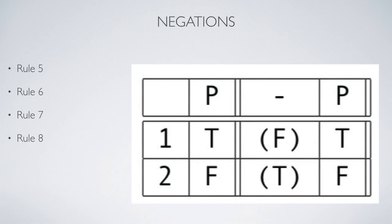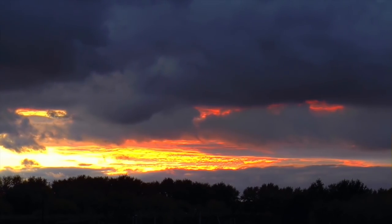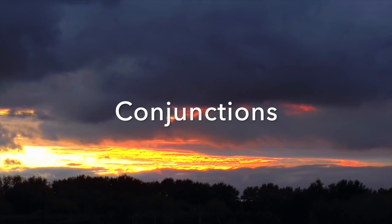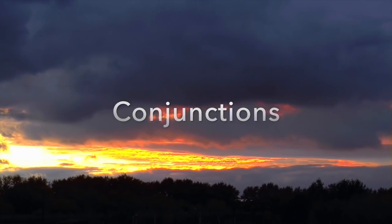Following Rule 6, we assign every possible combination — just T and F — in our column for P. Following Rule 7, we copy and paste those truth assignments over. Following Rule 8, we enclose the truth values in parentheses. Where P is true, the negation is false; where P is false, the negation is true — following our truth conditions for negations.